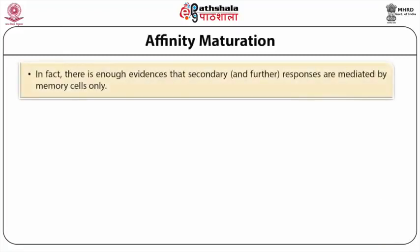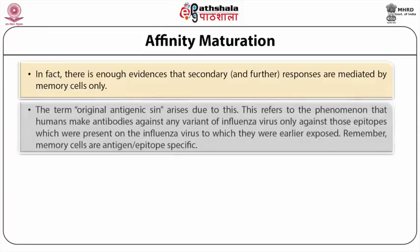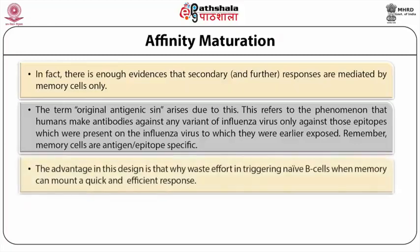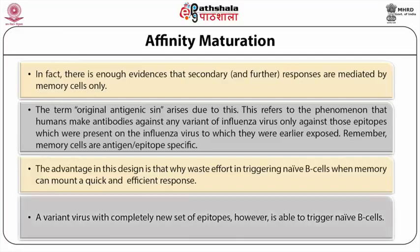There is enough evidence that secondary and further responses are mediated by memory cells only. The term 'original antigenic sin' arises due to this — it refers to the phenomenon that humans make antibodies against any variant of influenza virus only against those epitopes which are present on the influenza virus to which they were earlier exposed. The advantage is that there is no need to waste effort triggering naive B cells when memory can mount a quick and efficient response. A variant virus with a completely new set of epitopes, however, is able to trigger naive B cells.